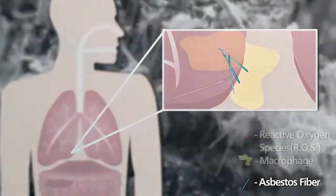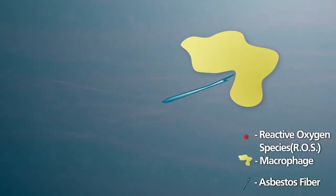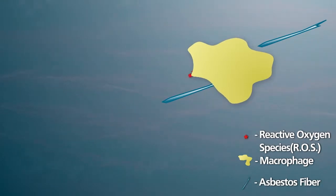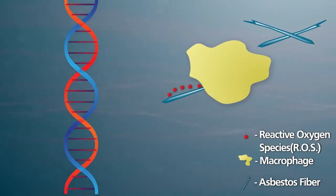After the asbestos fibers lodge in human tissue, the immune system sends a special cell known as a macrophage that attempts to wrap around and remove the fiber. But unfortunately, not all macrophages are successful in removing the fibers.